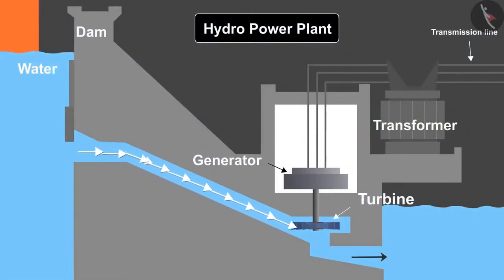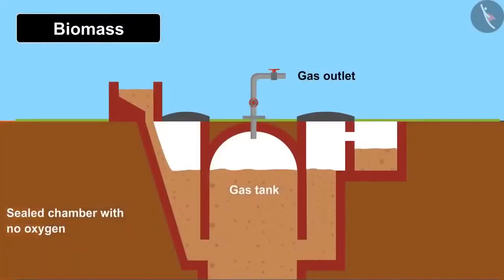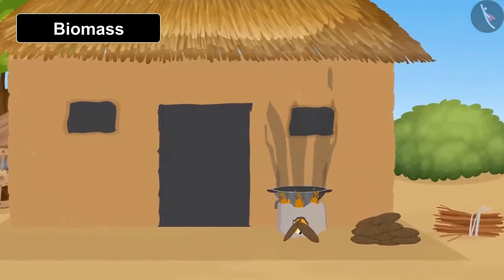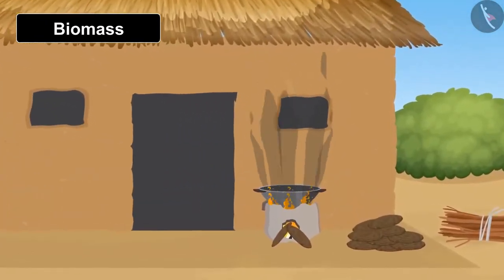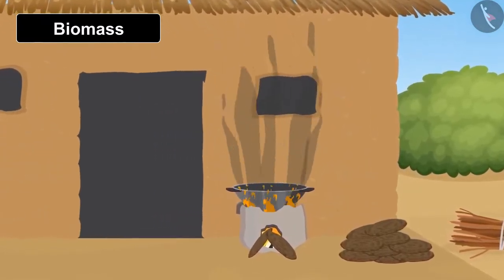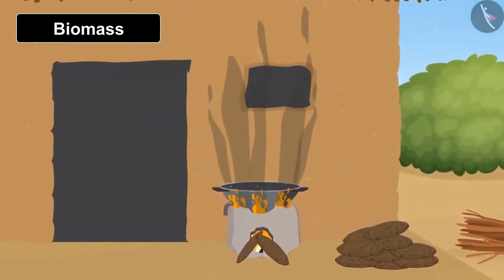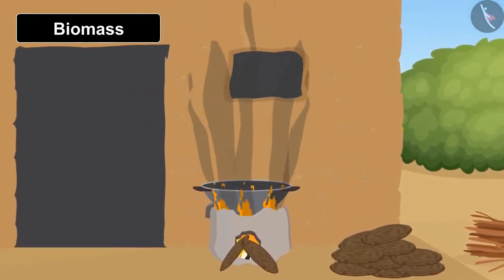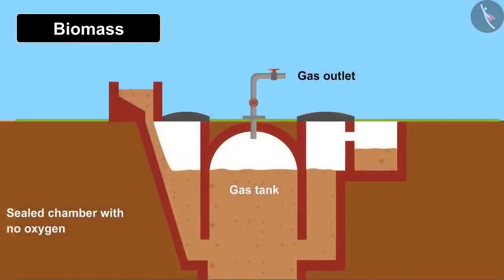Another form of energy conversion is through biomass plants. Dried cow dung and the remains of agriculture are used as fuel in villages, but this causes a lot of air pollution and produces less energy. To convert a greater amount of energy, large biomass plants are constructed. The first step is to dig a large hole in the ground, which is known as a digester.